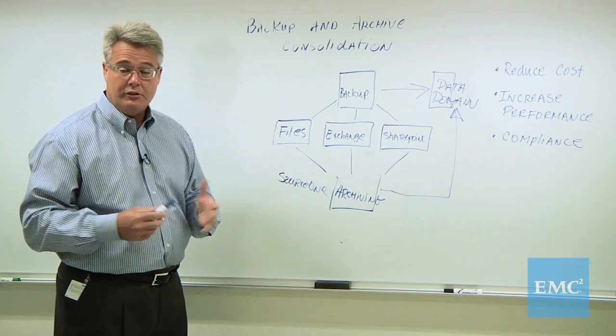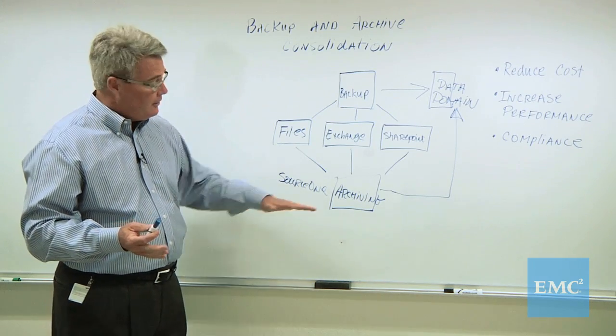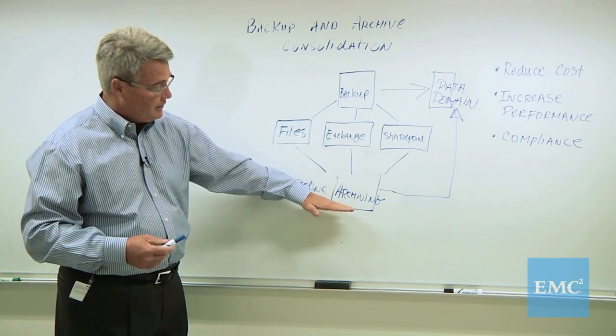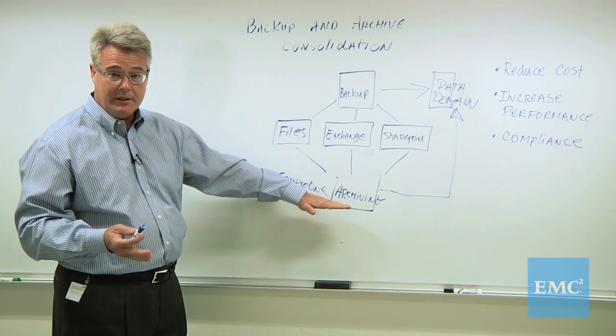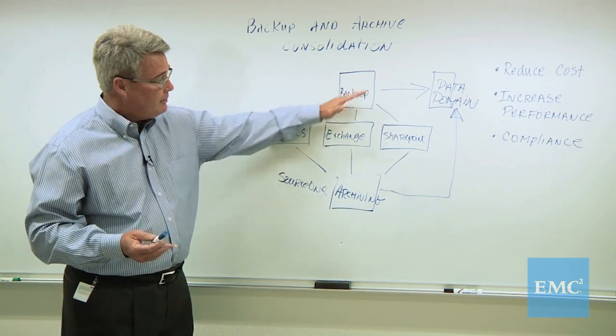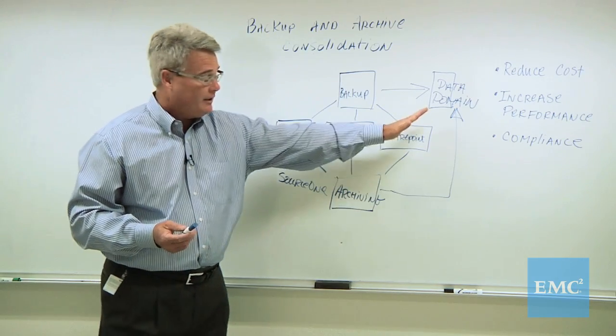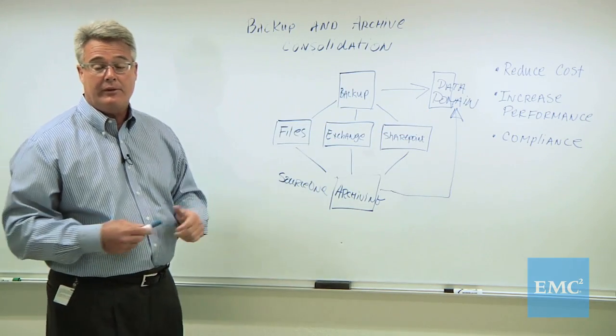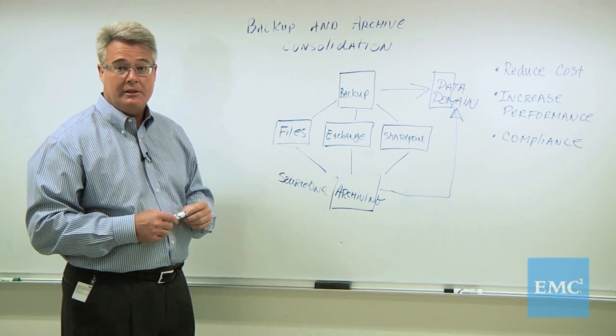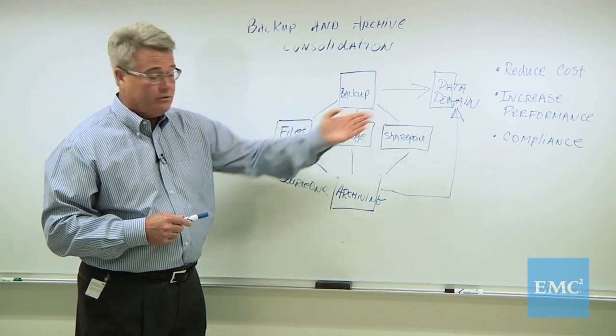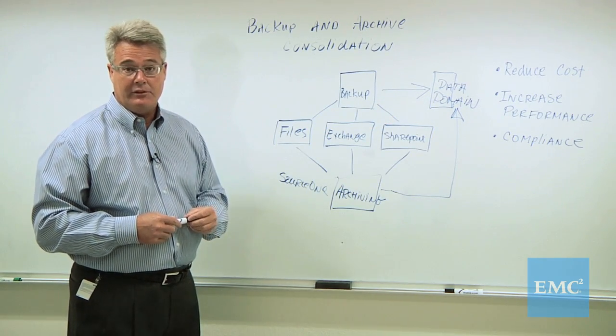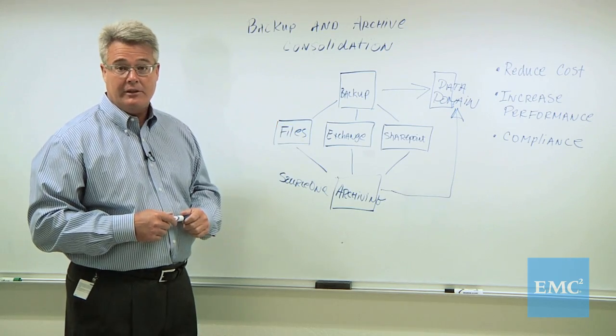First of all is deduplication. This data here has come usually after a policy is kicked in after a period of time. So this data has already been backed up when it gets moved to the archiving tier, stored on Data Domain. Well, you're going to get very, very high deduplication rates. So your archived data can be stored on Data Domain with very high efficiency, thereby saving on storage costs.